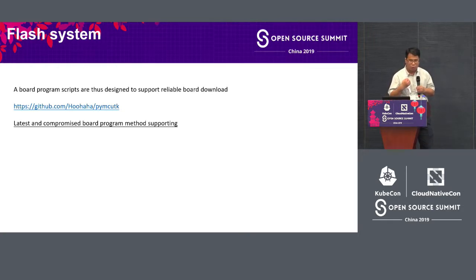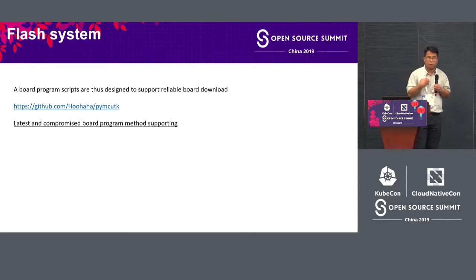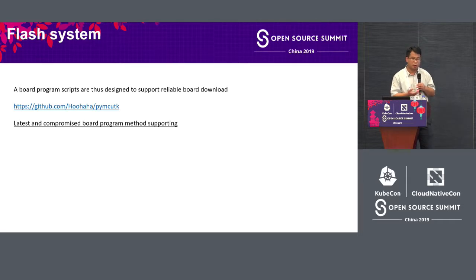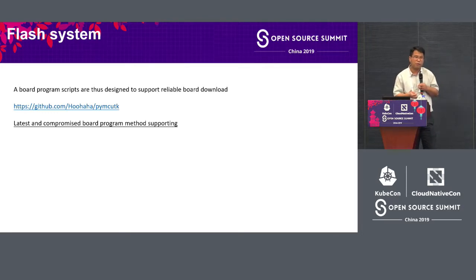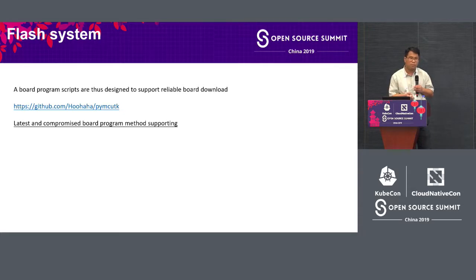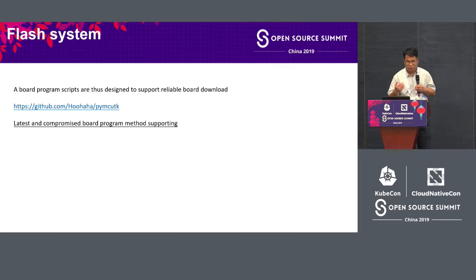The next topic is the flash system. For building development on any board, you have to customize your program since we are a chip supplier. We have developed PYMCUTK — a toolkit to program all of our company's chips. It supports JLink-GDB and MCUXpresso. You can call the command lines of these systems, do double-check after download, and use J-Link or J-Bug to reset functions. All of this is included in the script and is already open source.